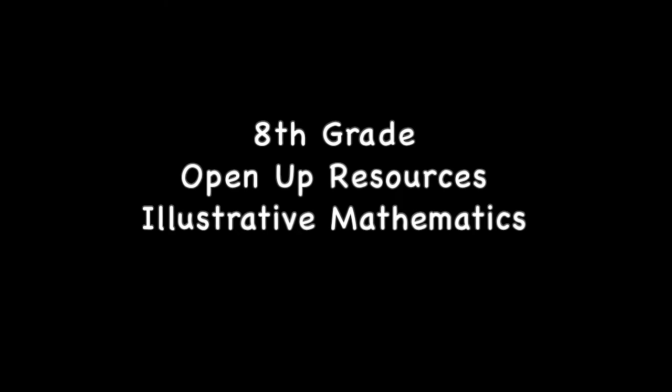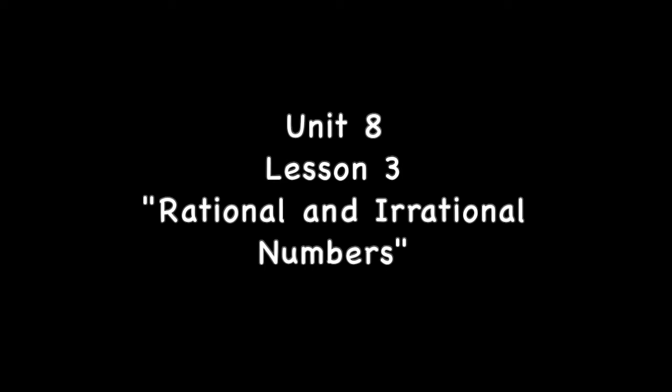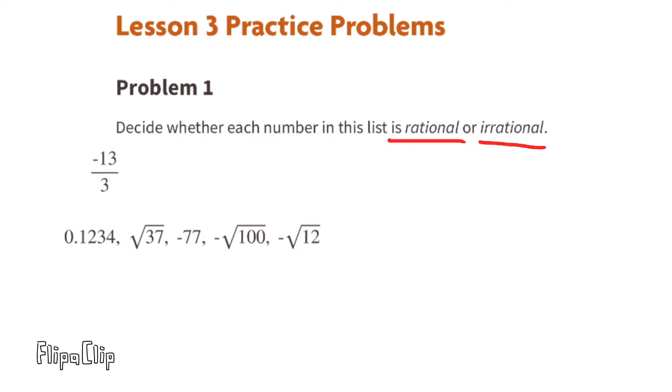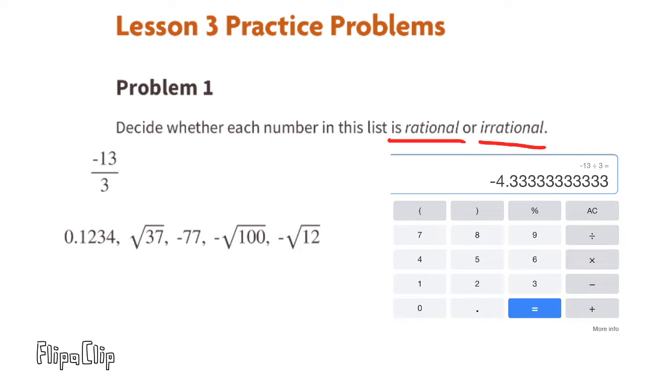Eighth grade Open Up Resources Illustrative Mathematics, Unit 8, Lesson 3: Rational and Irrational Numbers. Problem number one: decide whether each number in this list is rational or irrational. Negative 13 divided by 3 equals negative 4.3 repeating, which is a rational number.